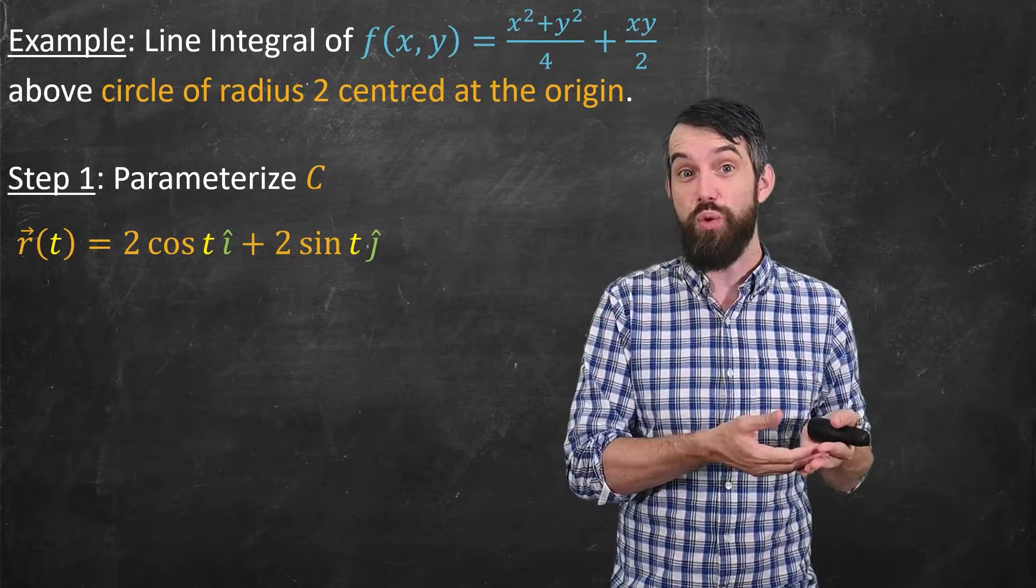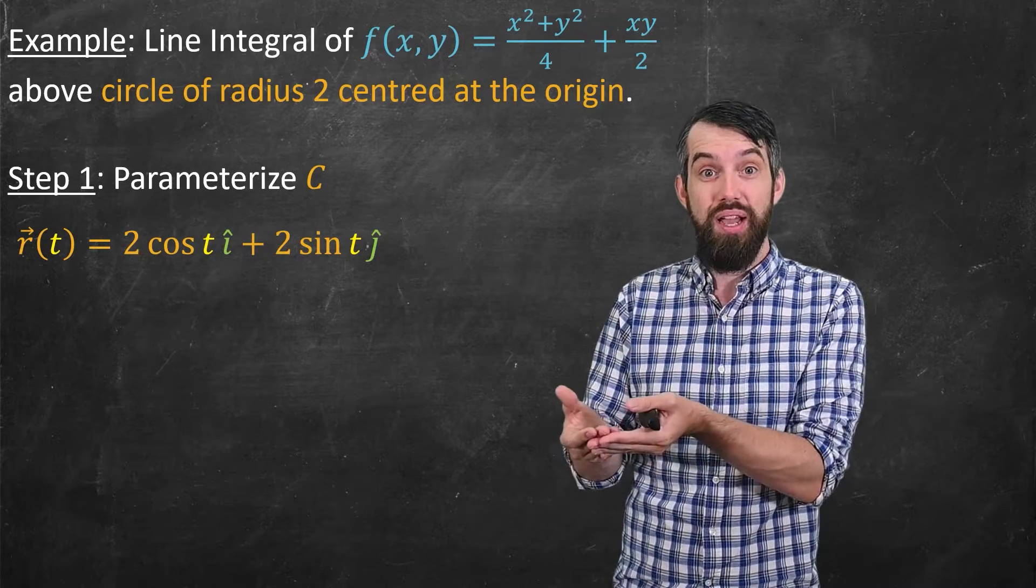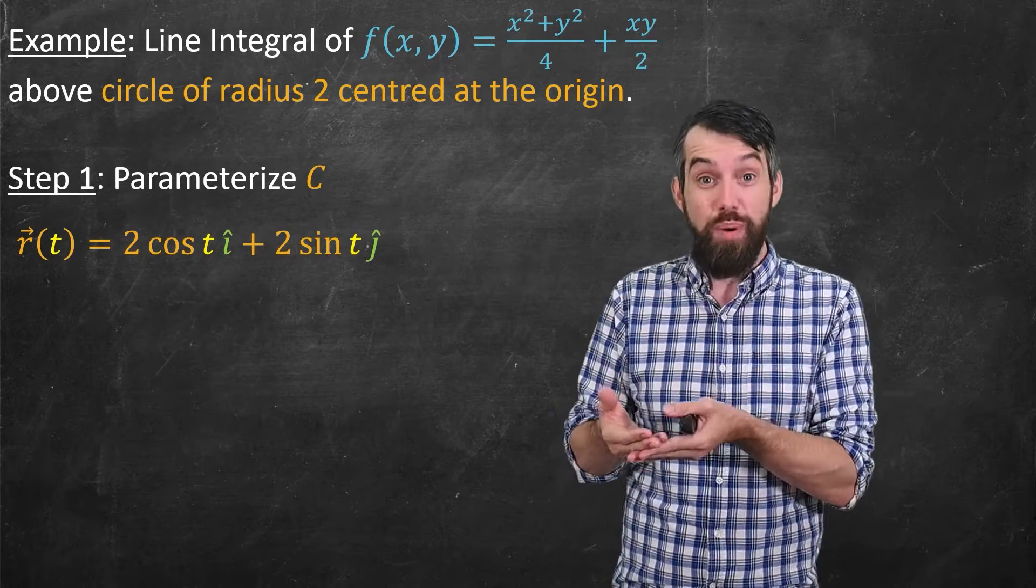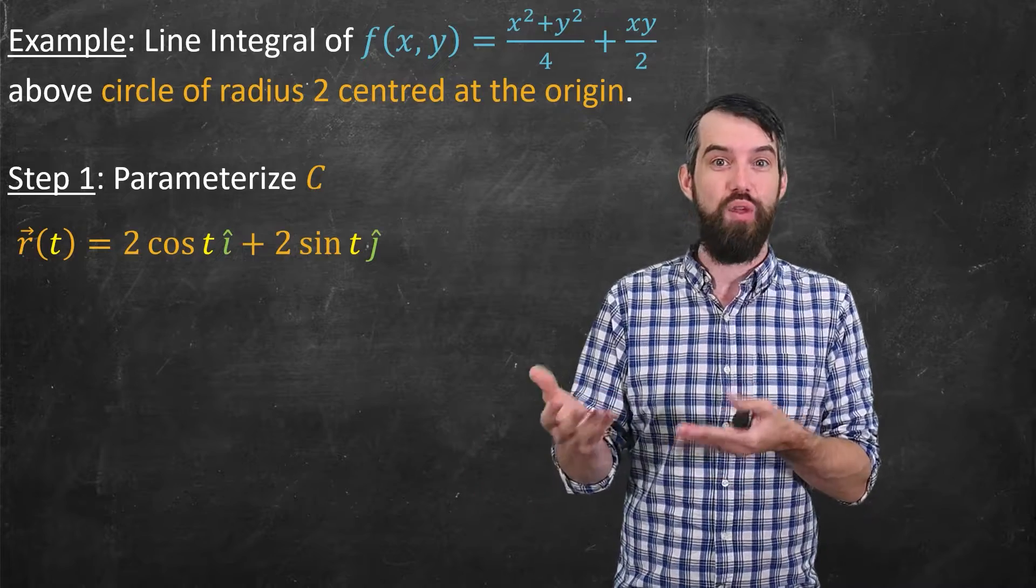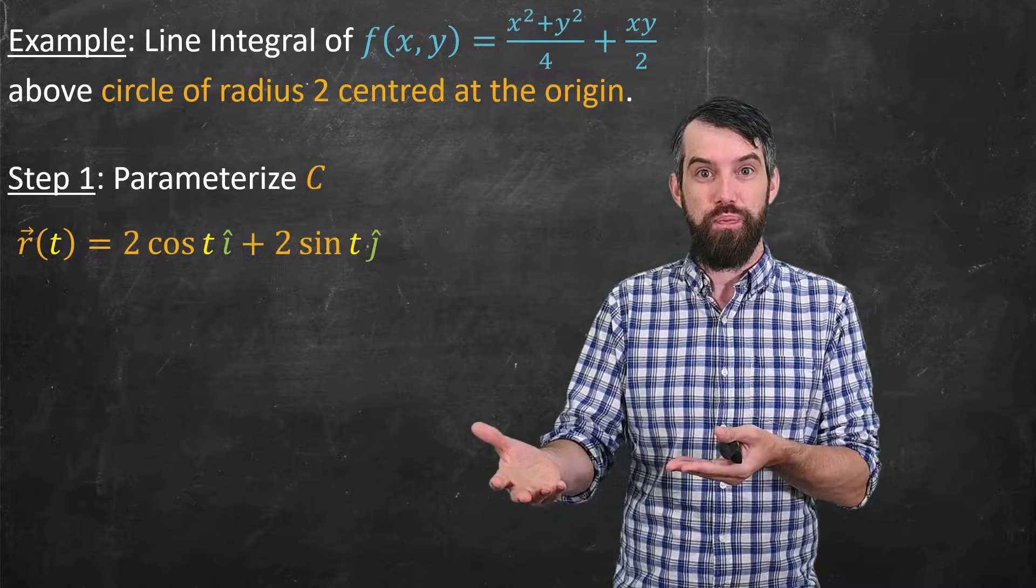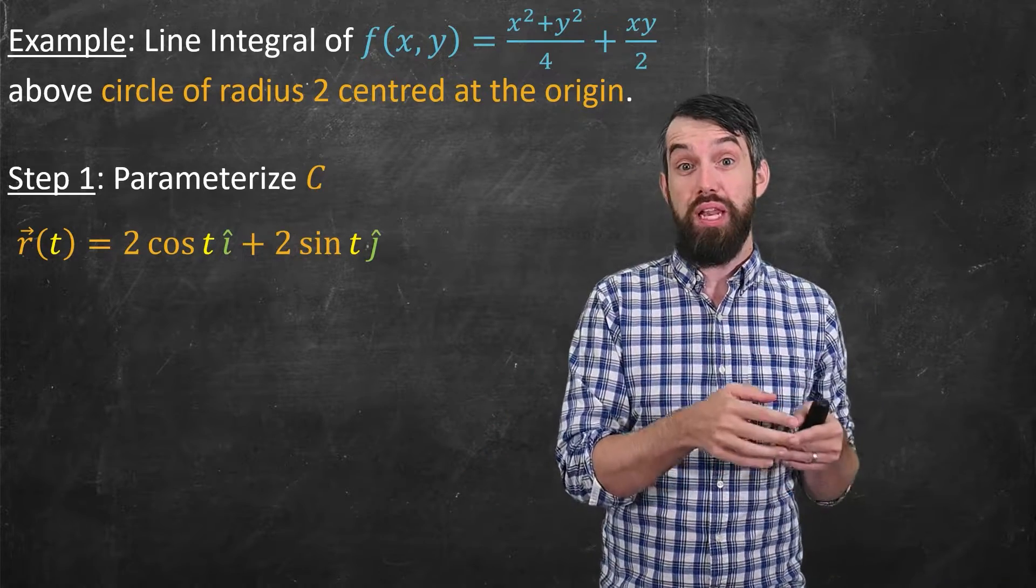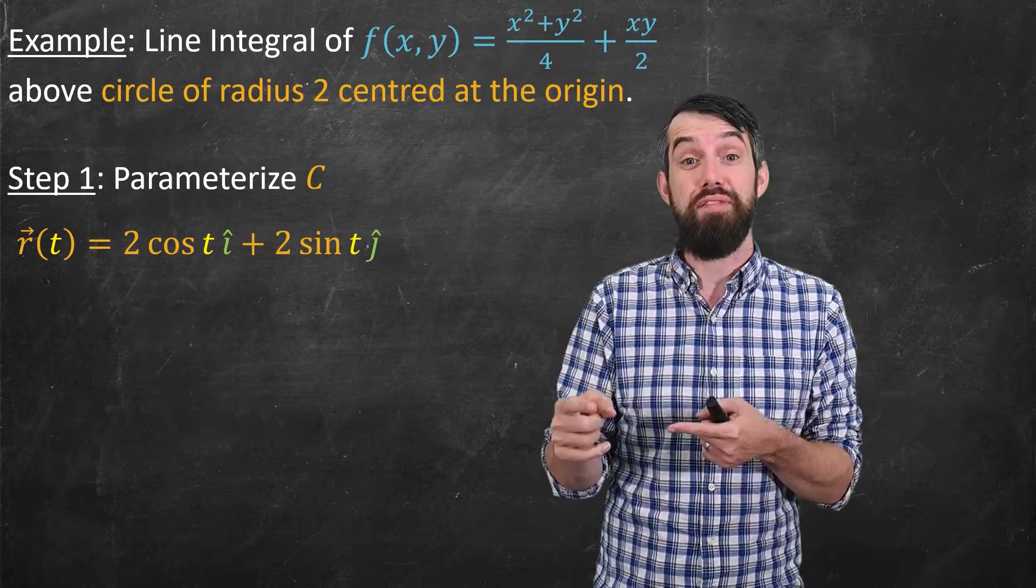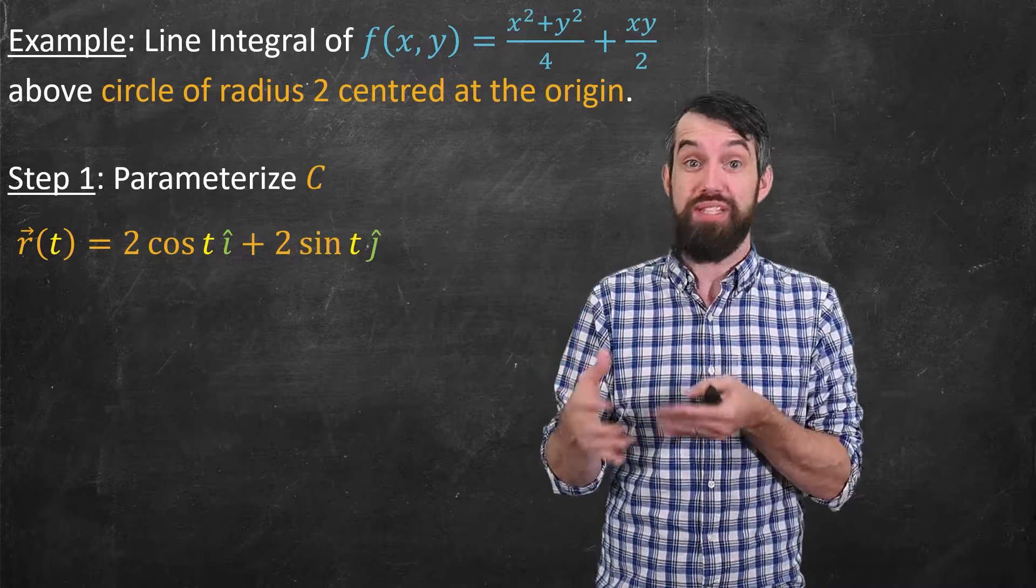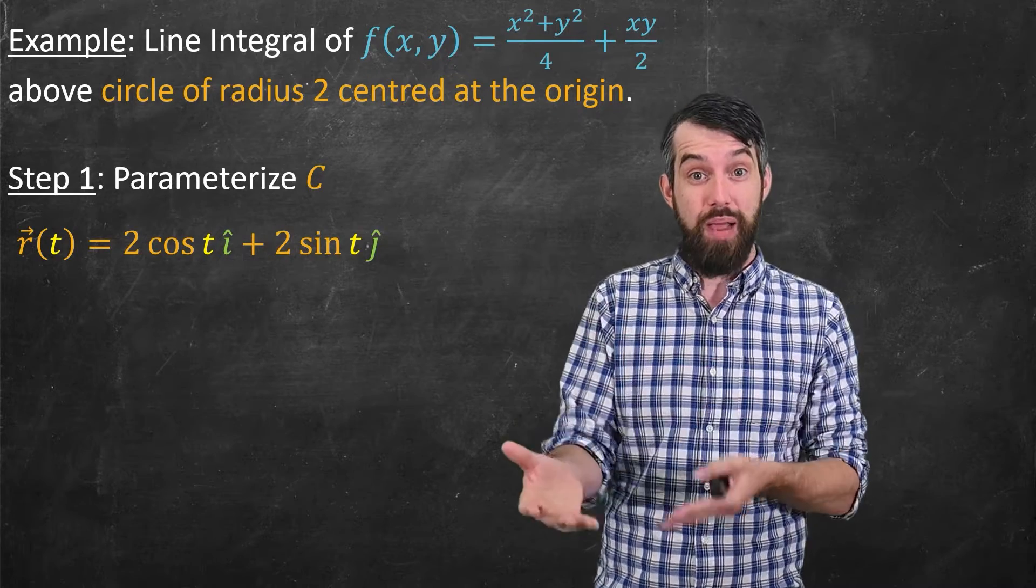But if you take the x component squared here and the y component squared here because of Pythagoras, indeed that adds up to 2 squared, in other words, a circle of radius 2. To align with the previous formula, the 2cos t we call g and the 2sin t we call h. So the x and y components get those names, g of t and h of t, respectively.